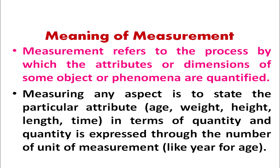In order to answer all these queries we have different terms: one is measurement, the second is assessment, and the third is evaluation. First we will discuss about the meaning of measurement. Measurement refers to the process by which the attributes, dimensions, or characteristics of some object or phenomena are quantified. That means measurement is a process by which we try to quantify the characteristics or attributes of any object in terms of some number — we assign numbers, scores, or marks to a particular attribute of any object.